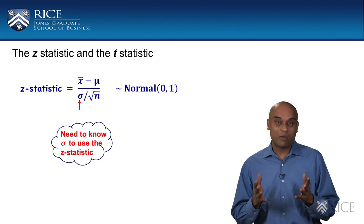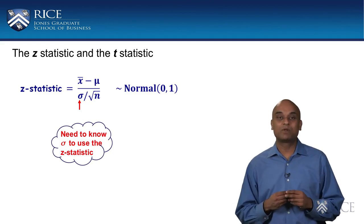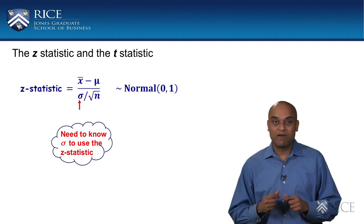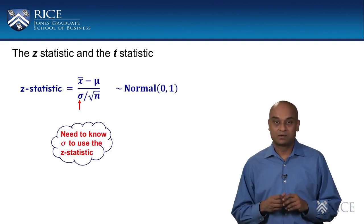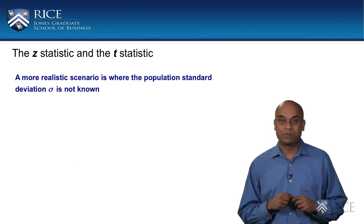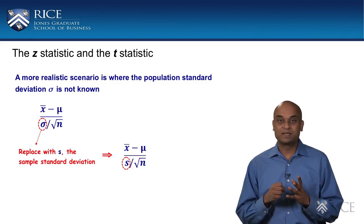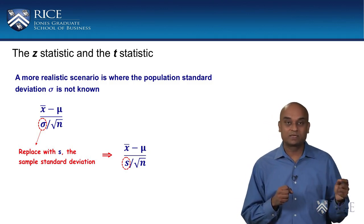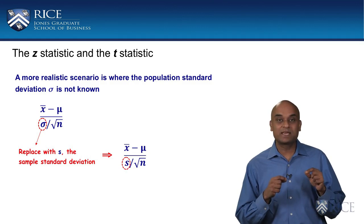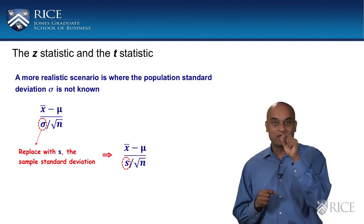Now, if we do not know the mean of the population data, it is highly likely that we would not know the standard deviation or variability of the population data either. However, if we are using the Z-statistic in our calculation, we do need a value for the population standard deviation sigma. So, a more realistic scenario is where we do not know the population standard deviation. In such cases, in the calculation for the Z-statistic, we replace the population standard deviation sigma with the sample standard deviation s. Remember, the sample data is something you have access to, and hence you can easily calculate the sample standard deviation in Excel using the STDEV.S command.